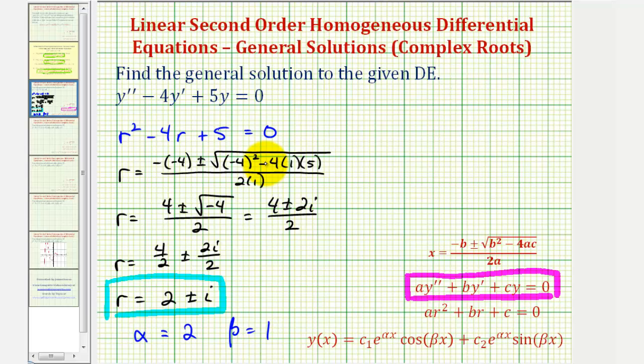So now we'll simply make the substitutions into y of x. So the general solution will be y(x) equals c sub 1, a constant, times e raised to the power of alpha x, which would be 2x, times cosine of beta times x. Again, beta is 1, so we just have cosine x.